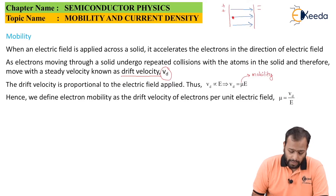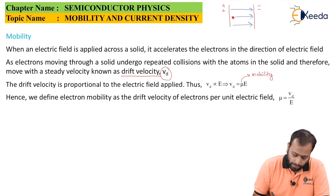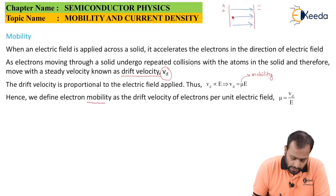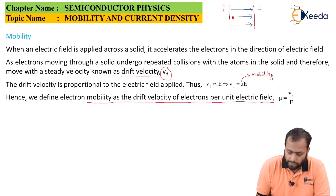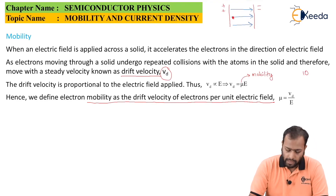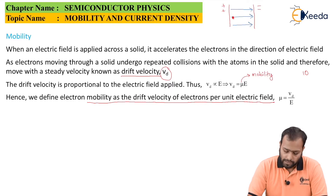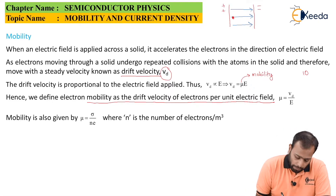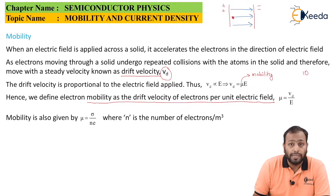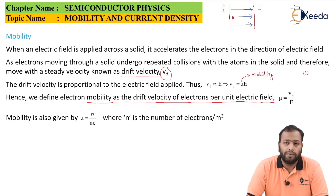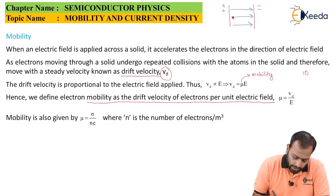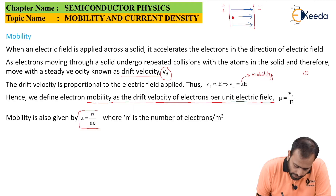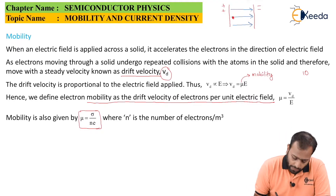We define electron mobility as the drift velocity of electrons per unit electric field, so μ = Vd/E. For example, if μ equals 10, the drift velocity is 10 m/s when applying an electric field of one unit. Mobility can also be expressed as μ = σ/(n·E), where σ is conductivity and n is the number of electrons per meter cubed, also called electron density.